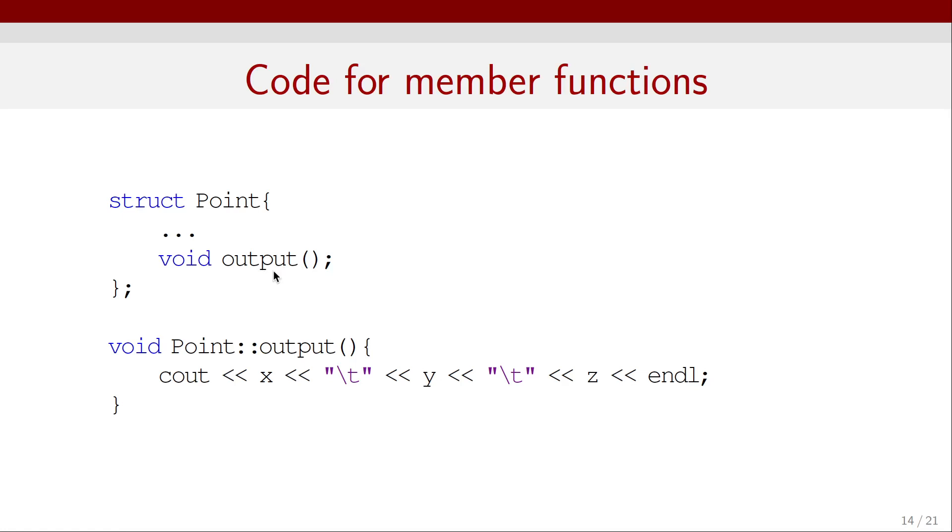But I want to define that function later. So, to do that, I can first access the object Point by using these colons and then access the output function inside that Point. So that specifies that this output function is inside that object Point. And this is what we are defining here.